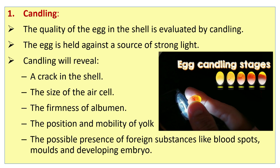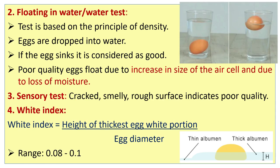In the candling method, the egg is held against a source of strong light like candles or other light. Candling will reveal a crack in the shell, the size of the air cell, firmness of the albumin, the position and mobility of the yolk.